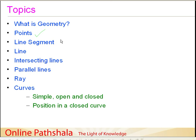Then we move on to the next concept, which is that of a line segment. We then build upon our learnings of line segment and define what we mean by a line in geometry. Once we understand the concept of a line, we discuss what we mean by intersecting lines and in which scenario lines are intersecting. Then we also discuss what we mean by parallel lines and their definition. Having discussed that, we move ahead to understand the concept of a ray.